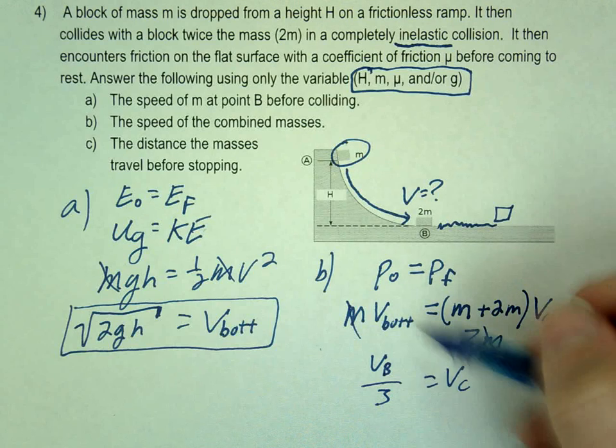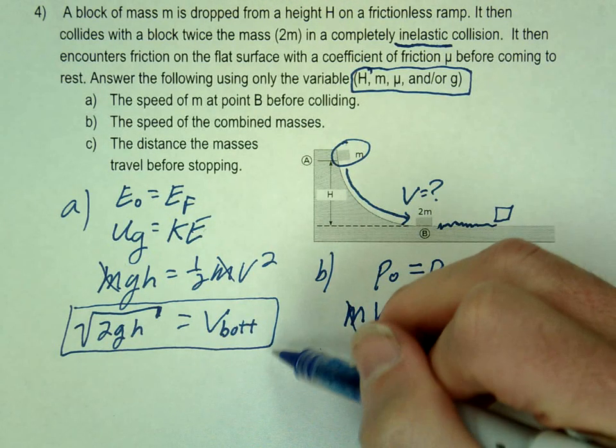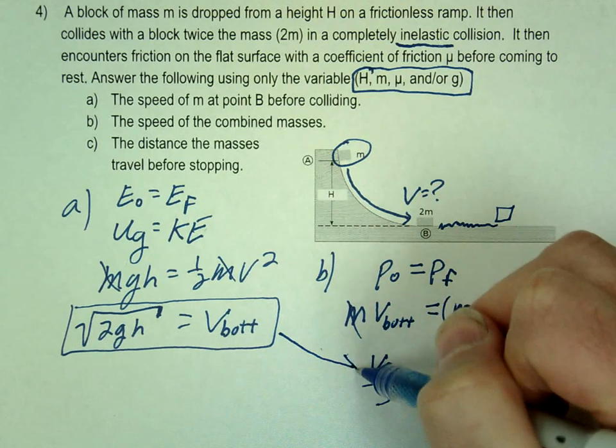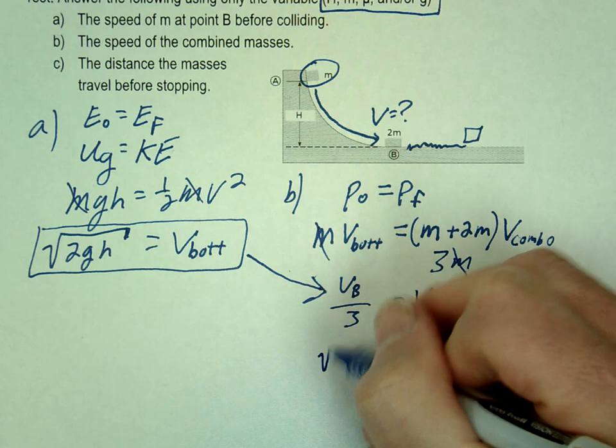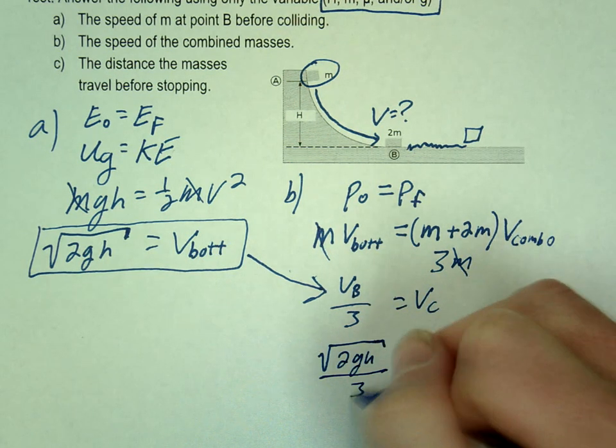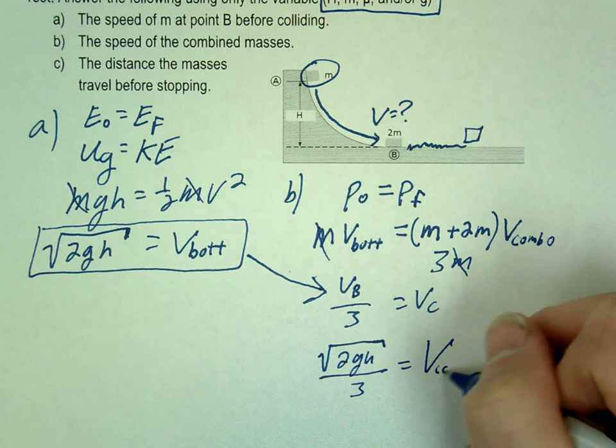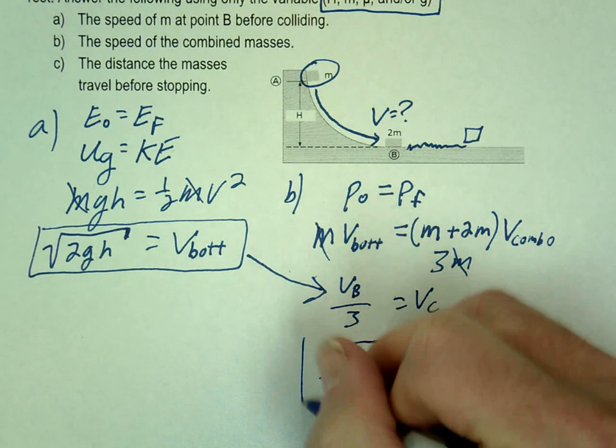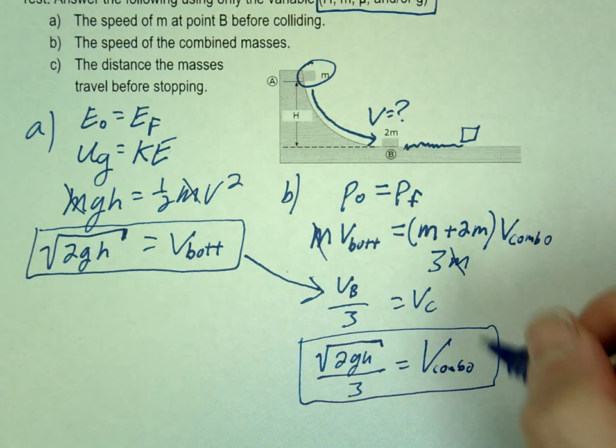Whenever this happens, you usually solve for it earlier like we just did. So you just make that substitution. And you should get square root of 2gh over 3 equals v combo. And that is question number b.